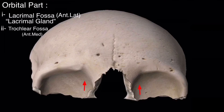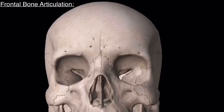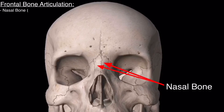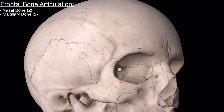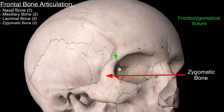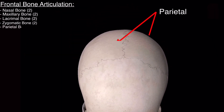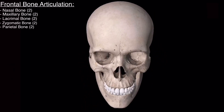The second depression is on the anteromedial side, called the trochlear fossa. The frontal bone articulates with 12 skull bones: the two nasal bones through the frontal nasal suture, the two maxillary bones through the frontal maxillary suture, the two lacrimal bones through the frontal lacrimal suture, the two zygomatic bones through the frontal zygomatic suture, and the two parietal bones through the coronal suture.